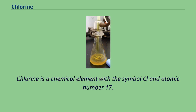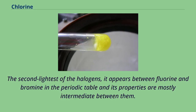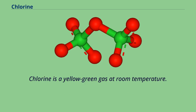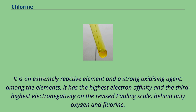Chlorine is a chemical element with the symbol Cl and atomic number 17. The second lightest of the halogens, it appears between fluorine and bromine in the periodic table and its properties are mostly intermediate between them. Chlorine is a yellow-green gas at room temperature. It is an extremely reactive element and a strong oxidizing agent, with the highest electron affinity and the third highest electronegativity on the revised Pauling scale, behind only oxygen and fluorine.